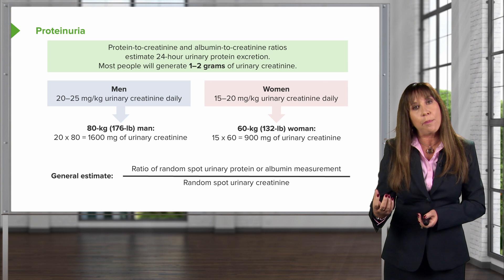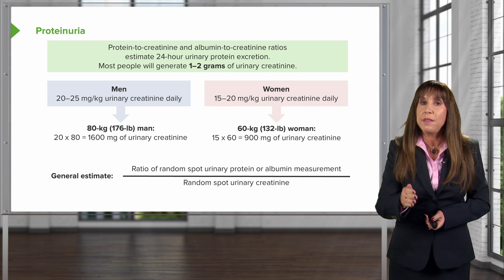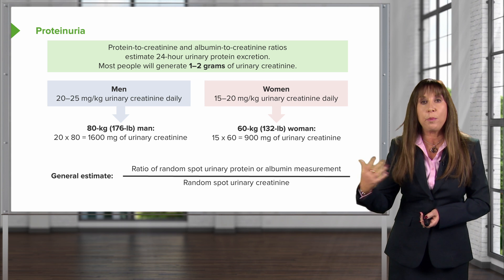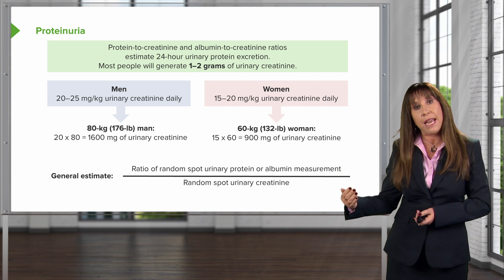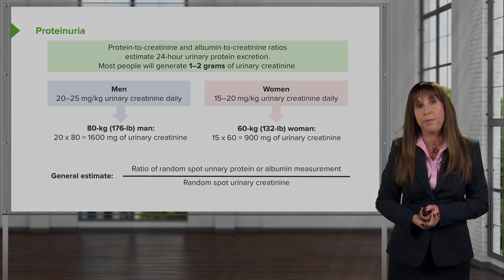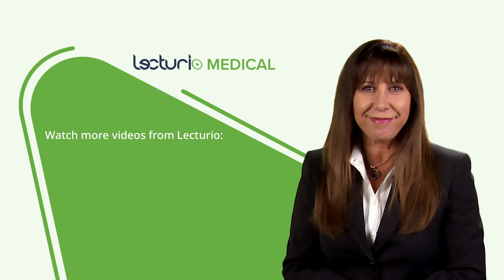What's really helpful about using these spot ratios is that it's something we can follow over time, and we can use it to assess therapeutic targets and make sure that the medications and other interventions we're using to treat our patients are actually working in decreasing proteinuria.